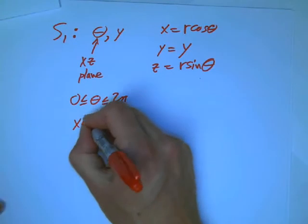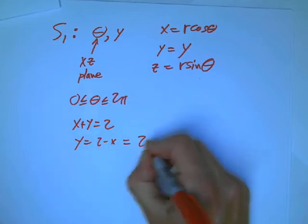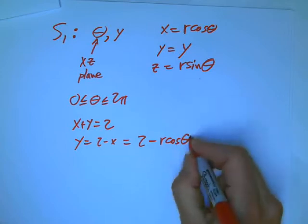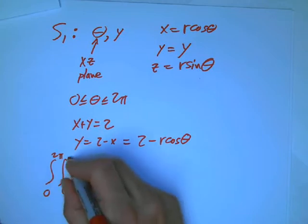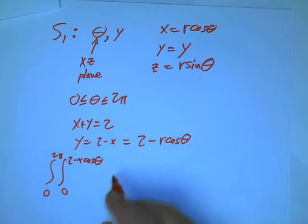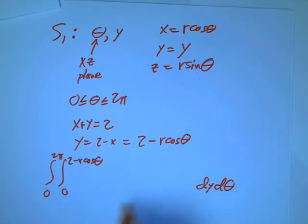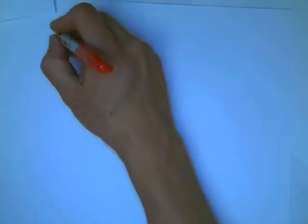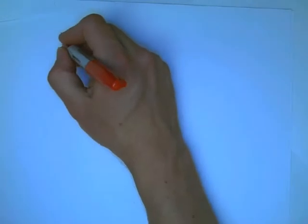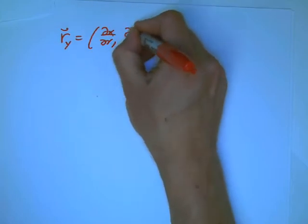So, what are the boundaries for the surface here? Well, theta is anything between 0 and 2 pi as usual. And then, the limits for y depend on theta. Because we know that x plus y equals 2 is that upper boundary, or y is 2 minus x or 2 minus r cos theta. So we're going to get an integral 0 to 2 pi, 0 to 2 minus r cos theta. And then we're going to have a dy d theta. But then, we still need the vector field and the rest of the ds part with the cross product.